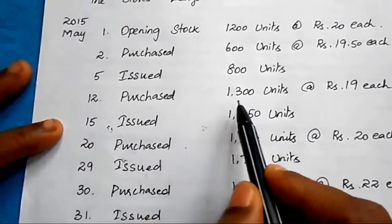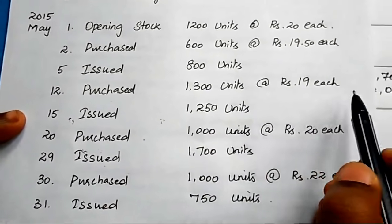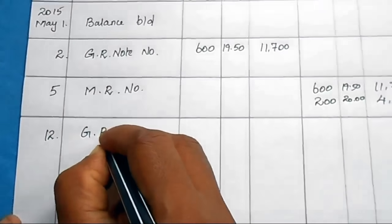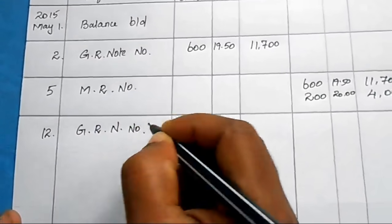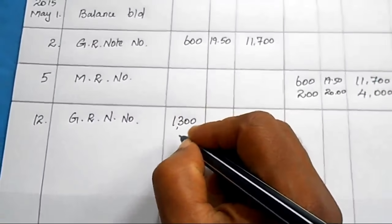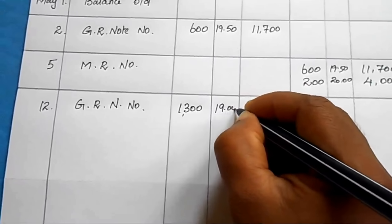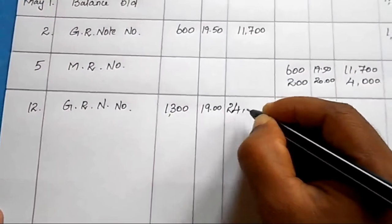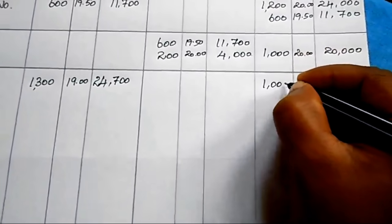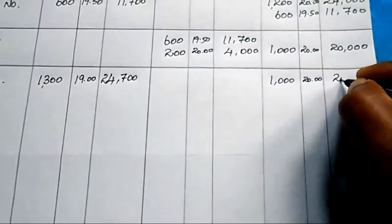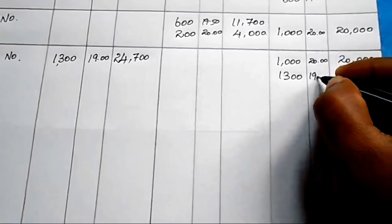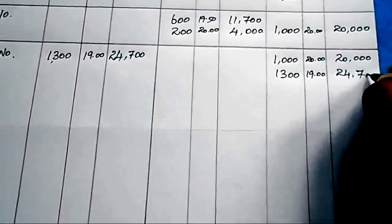On 12th May, purchased 1300 units at ₹19 each. Enter in the receipt column with the Goods Received Note number. Amount: 1300 × 19 = ₹24,700. Update balance: 1000 units at ₹20 = ₹20,000, plus new 1300 units at ₹19 = ₹24,700. Total: 2300 units in two lots.